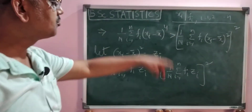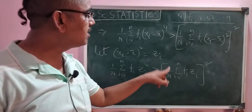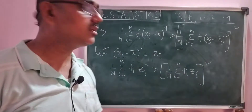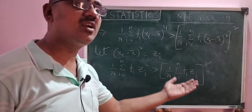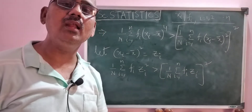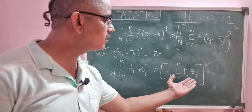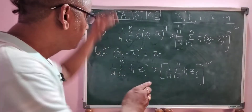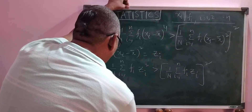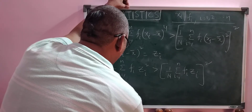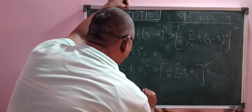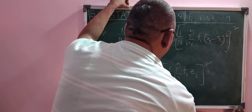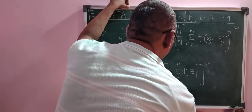Now observe this formula: 1 by N summation f_i z_i. If you consider the formula for x_i, then 1 by N summation f_i x_i is nothing but the mean x-bar. So here with variable z_i, this expression is nothing but z-bar. So 1 by capital N, summation i equals 1 to n, of f_i into z_i square is greater than z-bar square.